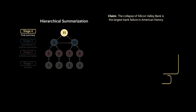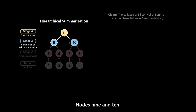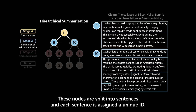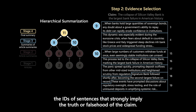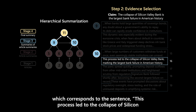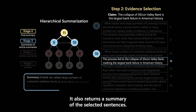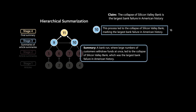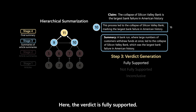We'll focus on the first claim about Silicon Valley Bank. Next, Veritrail identifies the nodes that were used as inputs for the final summary — nodes 9 and 10. These nodes are split into sentences and each sentence is assigned a unique ID. Then a language model performs evidence selection, returning the IDs of sentences that strongly imply the truth or falsehood of the claim. In this case, it returns ID 16 from node 10, corresponding to the sentence: 'This process led to the collapse of Silicon Valley Bank, marking the largest bank failure in American history.' It also returns a summary of the selected sentences. Based on the evidence, a language model performs verdict generation, deciding whether the claim is fully supported, not fully supported, or inconclusive. Here, the verdict is fully supported.